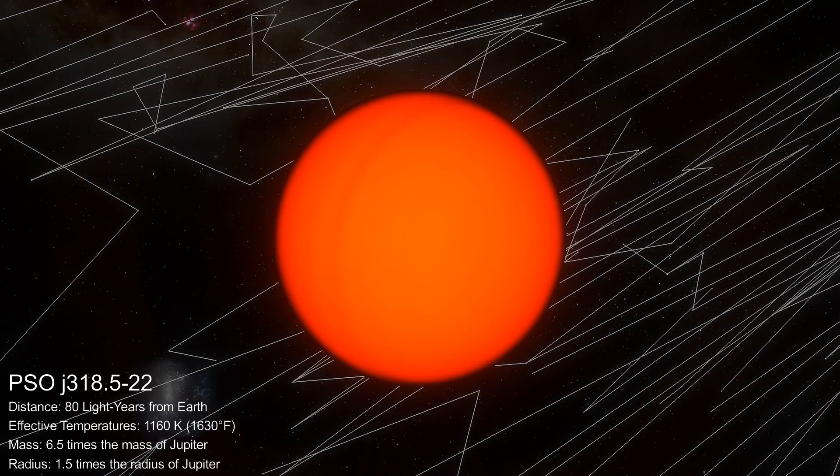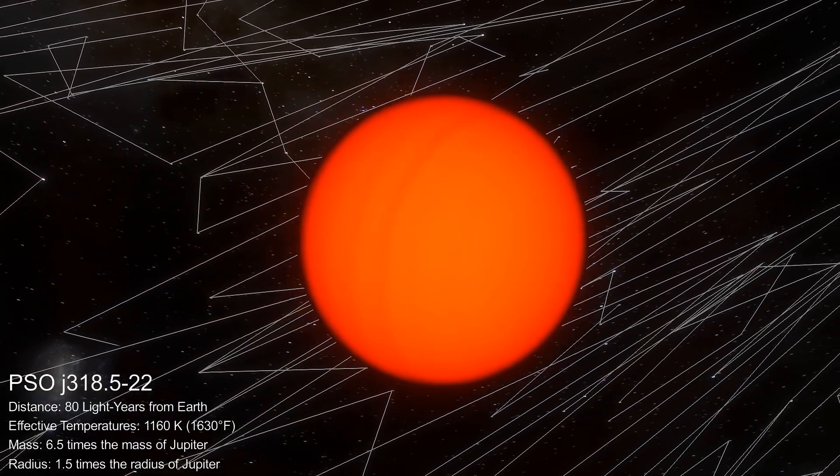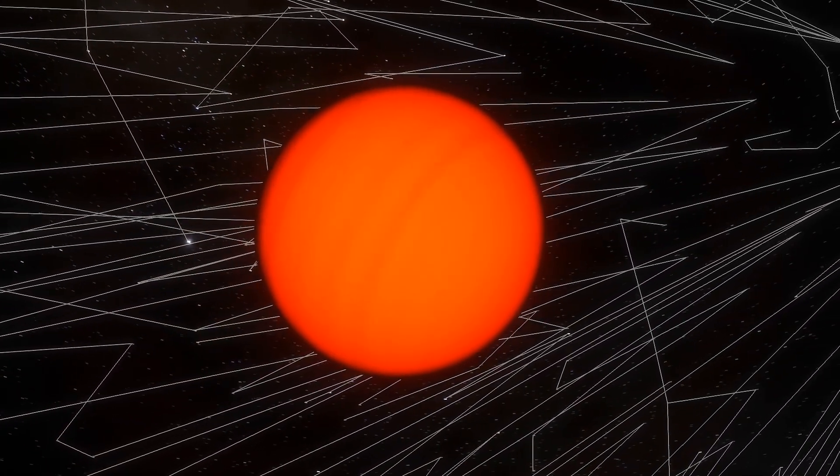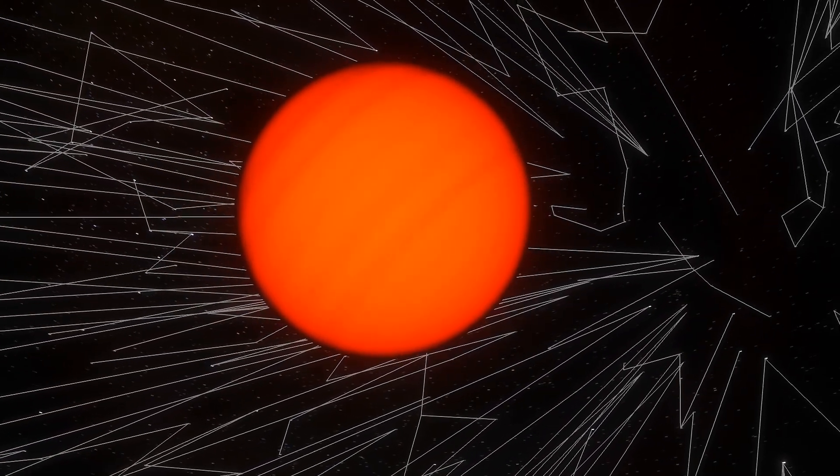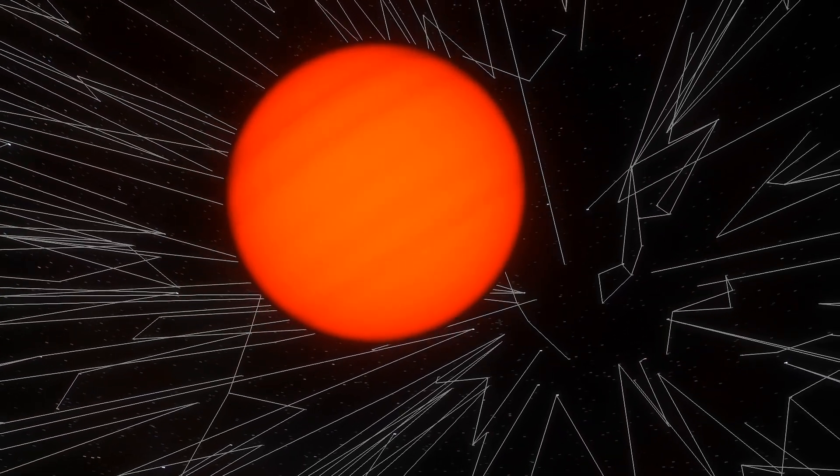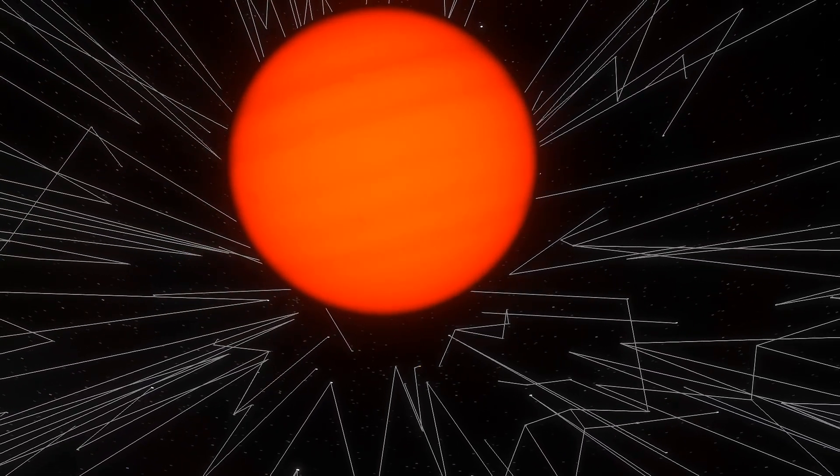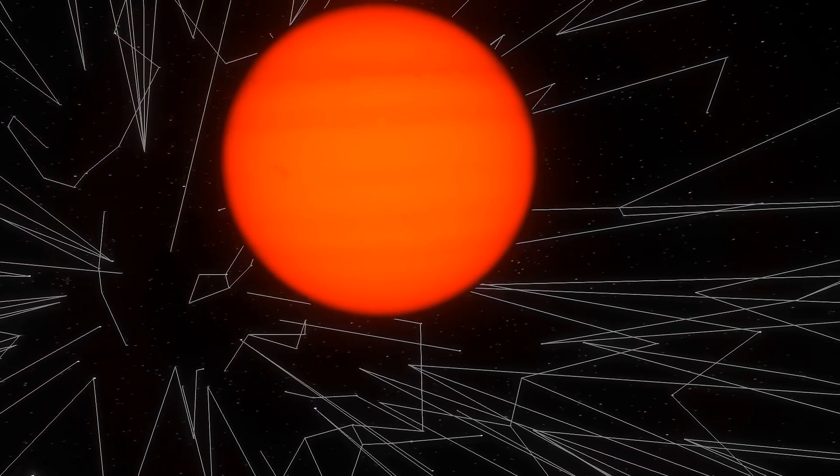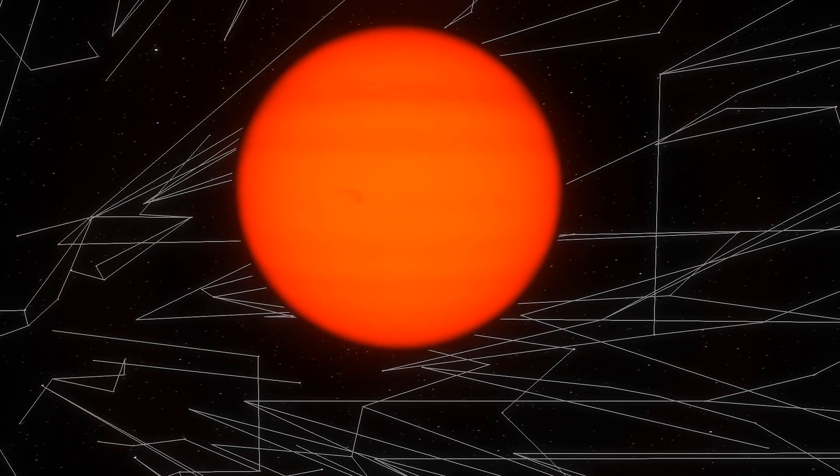This interesting object is PSO J318.5-22, essentially a rogue planet without a host star. It's the size of a planet, but with some features similar to those of cool brown dwarf stars. PSO J318 stood out to astronomers for its extremely red color when compared to other objects in the Beta Pictoris moving group of stars. At approximately 80 light-years from Earth, it is able to be directly imaged by telescopes from Earth, something that cannot be said for many exoplanets and exoplanet candidates.